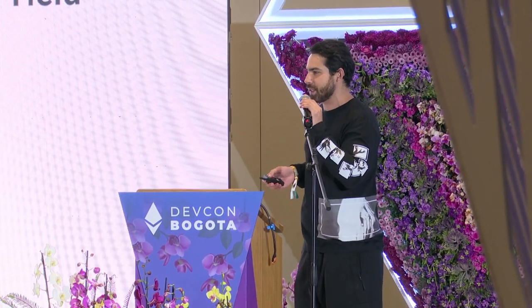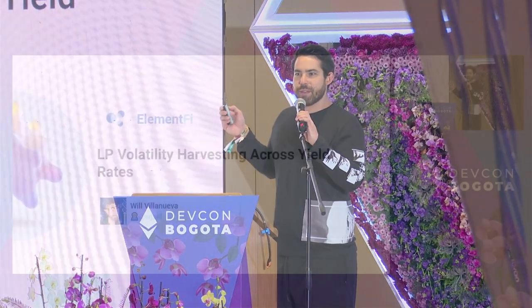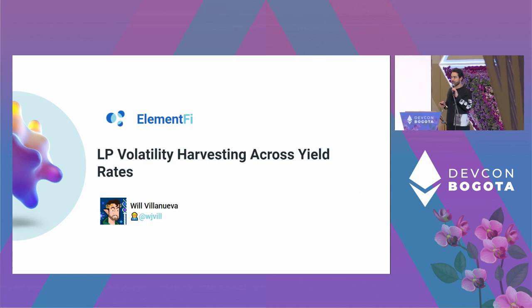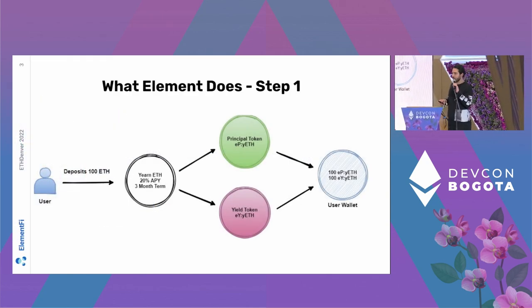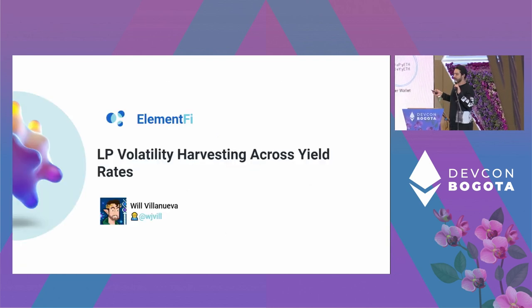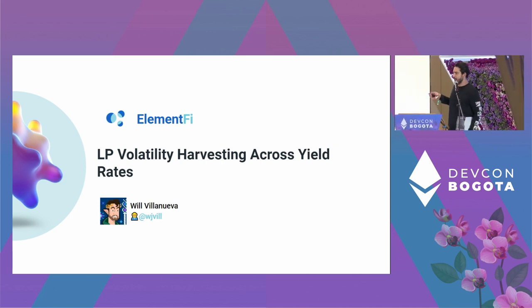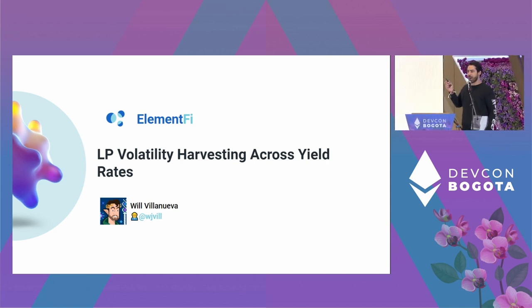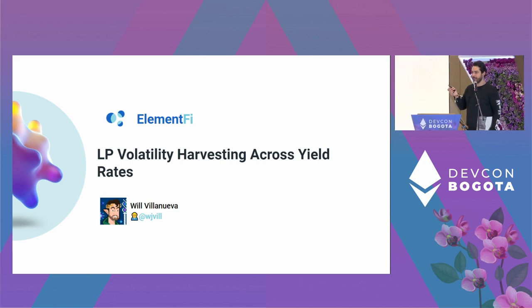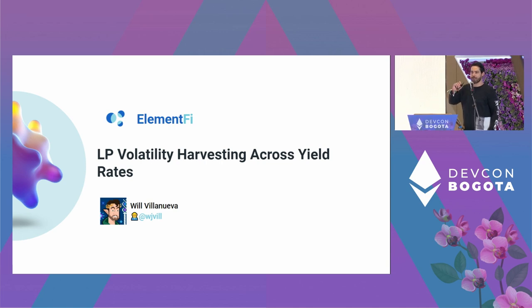Today I'm going to be talking about LP volatility harvesting across yield rates. Element Finance had an event last night. One of the things I want to talk about is what volatility harvesting is. At its essence, AMMs in the current market are volatility harvesting engines. As spot prices drop or rise, this gives opportunity for market makers to arb the market, make profit, bring those spot prices to a certain level, and allows LPs to capture fees and get value from those volatility changes.